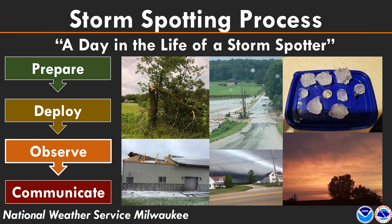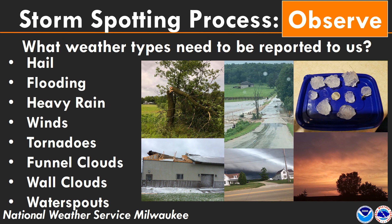Welcome to part four of the 2020 National Weather Service Milwaukee Sullivan Storm Spotter training. For this section, we start talking about what kind of severe weather you can observe and report to us. In this first part, we're going to talk about hail, flooding, heavy rainfall, and winds. In the second section, we'll talk about tornadoes, funnel clouds, and wall clouds. These are all the main things that we need to know about.